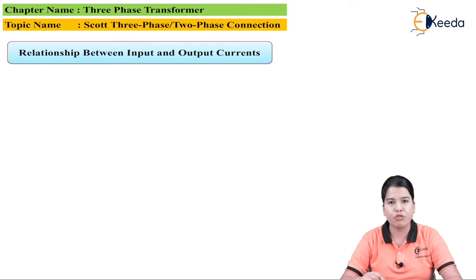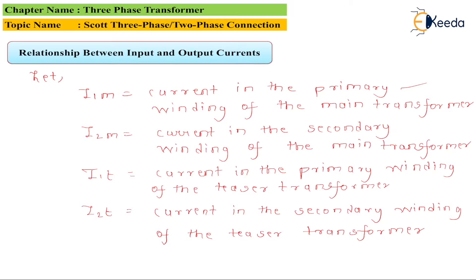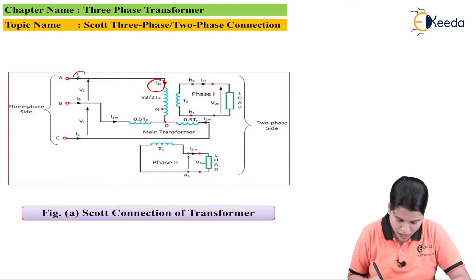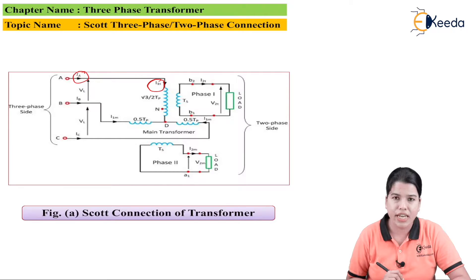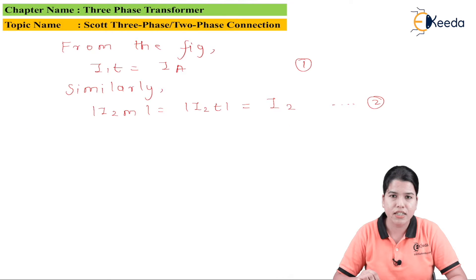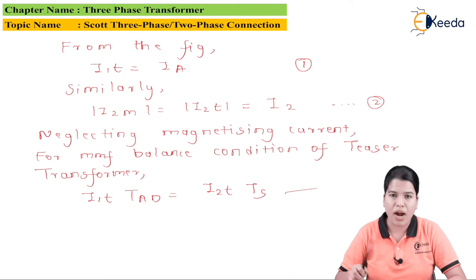Now let us study the relationship between input and output currents. Let I1M be the current in the primary winding of the main transformer, I2M the current in the secondary winding of the main transformer, and I1T the current in the primary winding of the teaser transformer. From the figure, I1T is nothing but IA. Also, I2M equals I2T equals I2. If we neglect the magnetizing current, then the MMF equation can be written as: I1T times TAD equals I2T times TS.